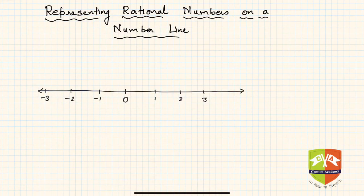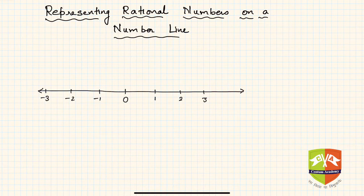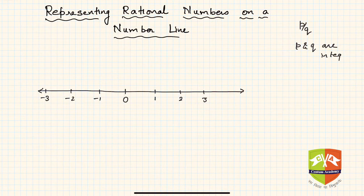Hello friends, welcome back to this session on number system. Today in this video we are going to learn about representing rational numbers on a number line. Hope you remember what rational numbers are — if not, you can go back and watch the previous session. A rational number is of the form p by q, where p and q are integers, written as p, q ∈ Z.